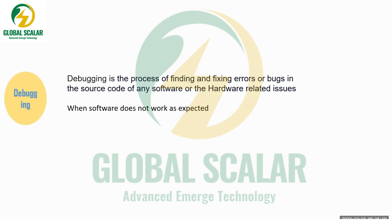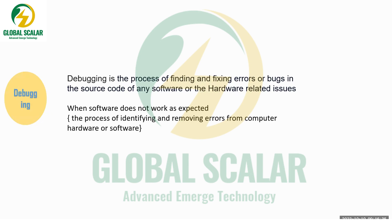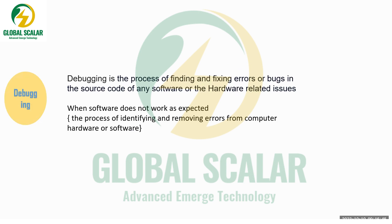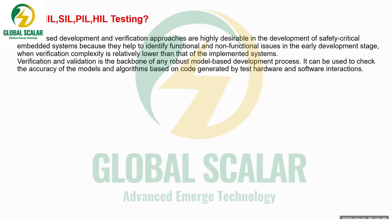When software doesn't work as expected, we debug — verifying each and every line in the software. The main intention is to identify the problems and errors, whether related to hardware or software, and fix them. That is the part of debugging.